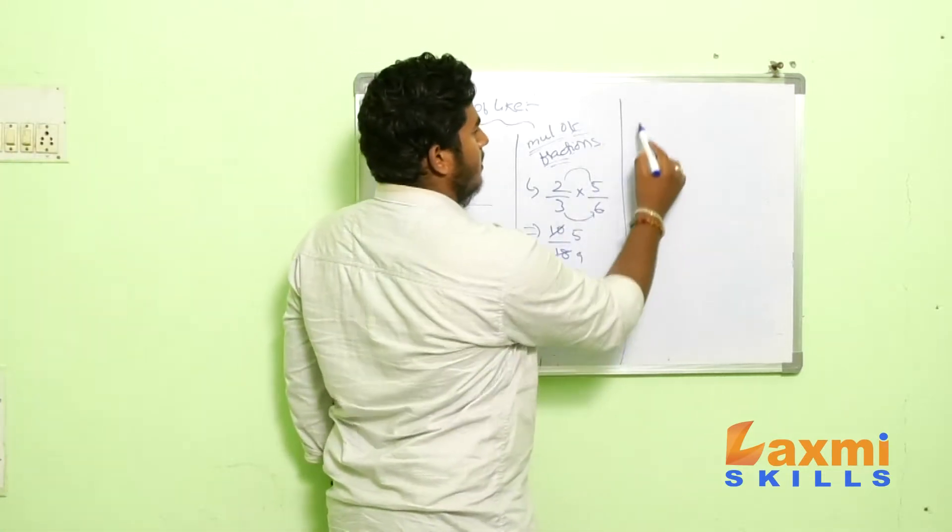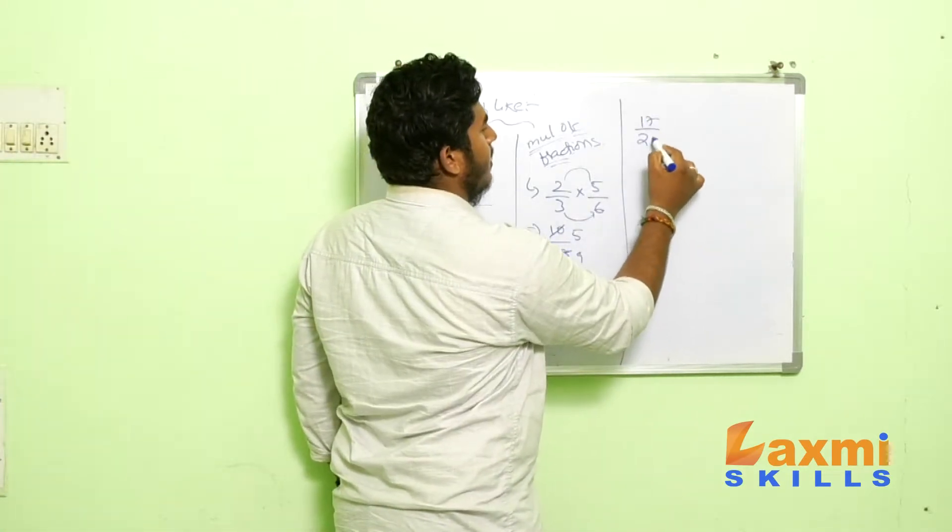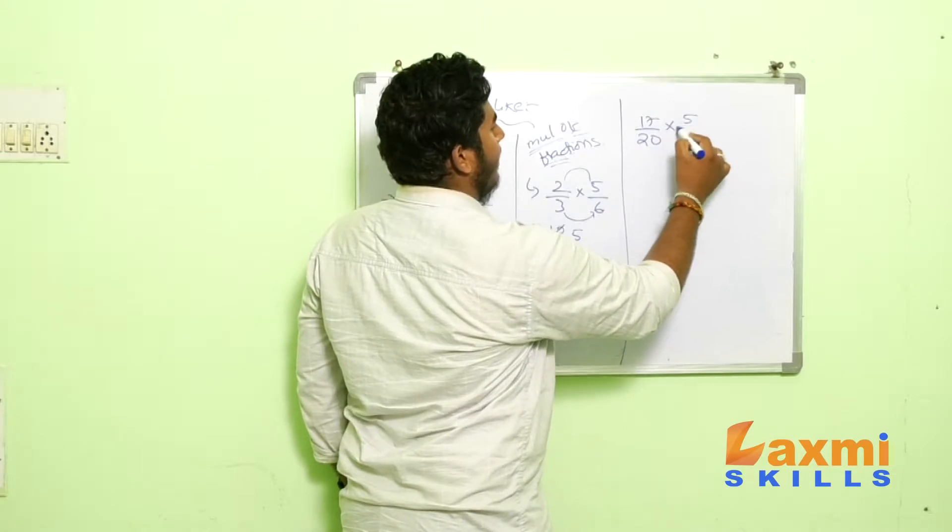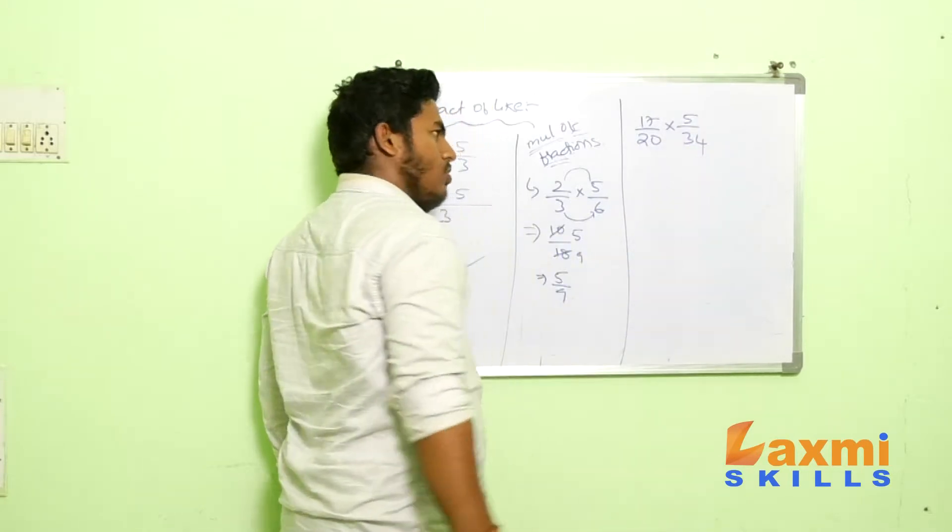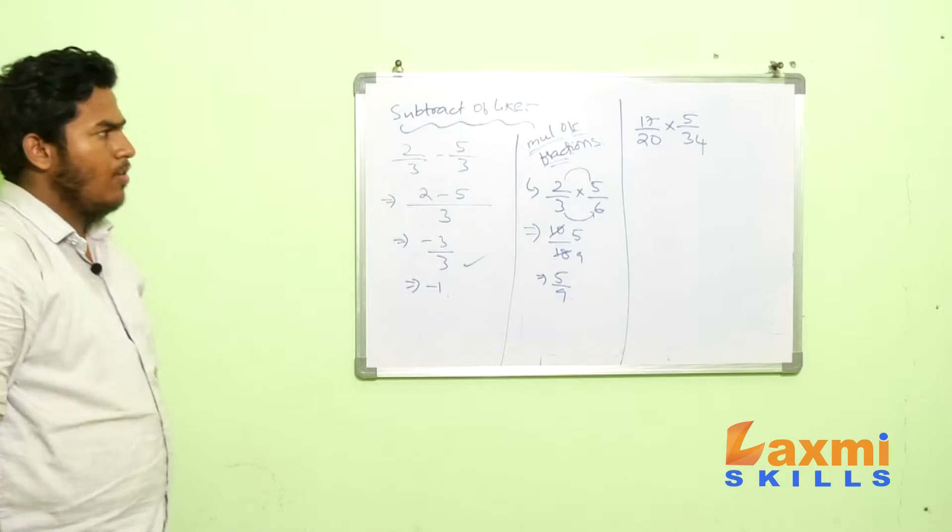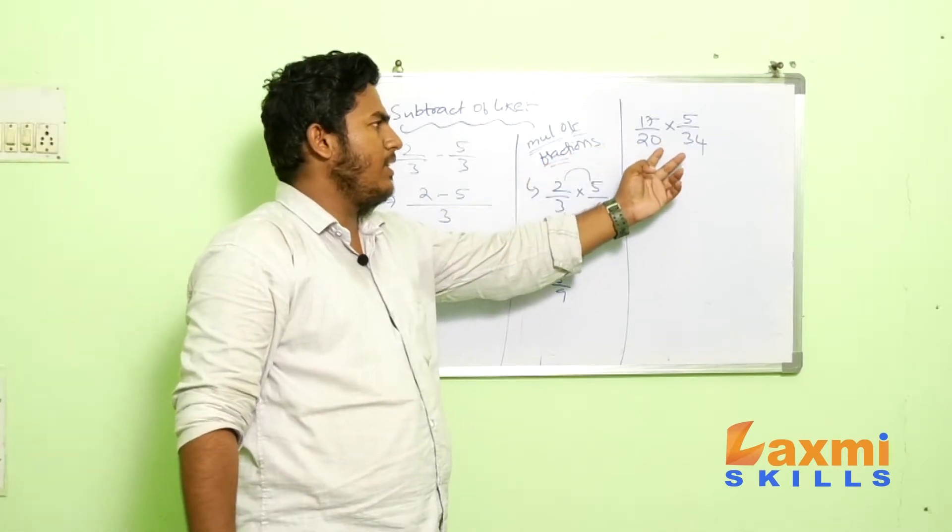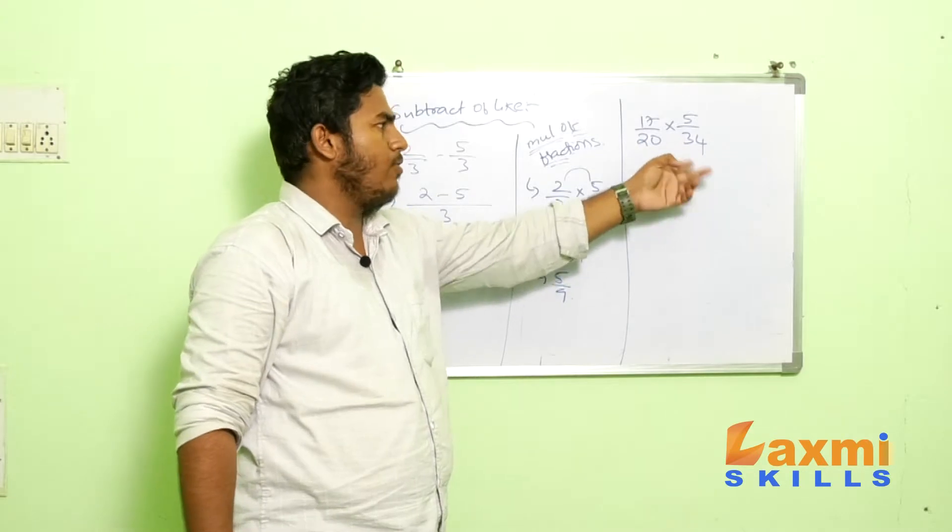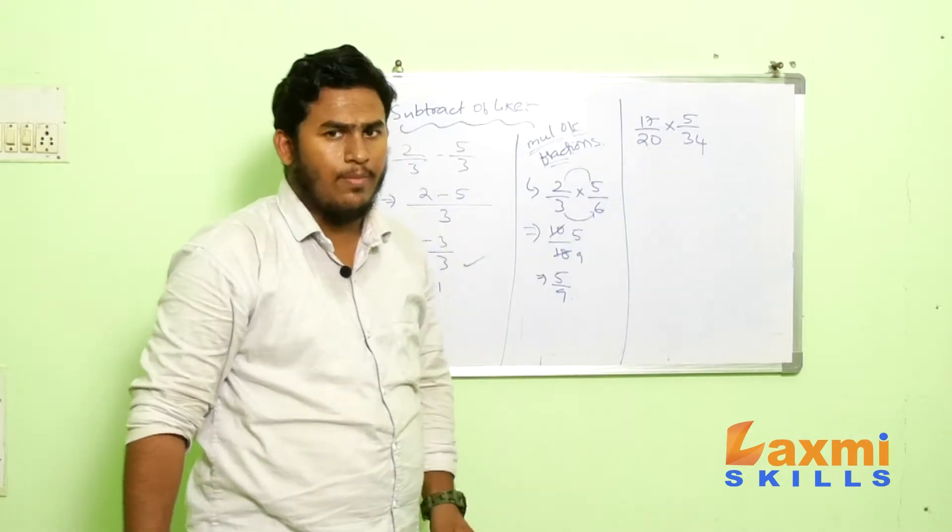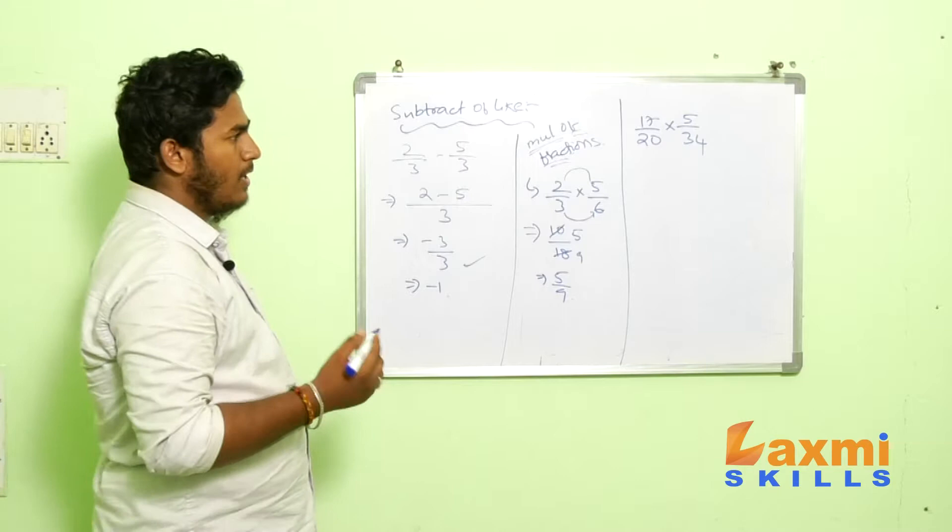For example, 17 by 20 into 5 by 34. So, the multiplications for these terms it will be quite difficult because you need to multiply 17 and 20 and 34. So, it will take a lot of time. So, there is a step called cancellations.